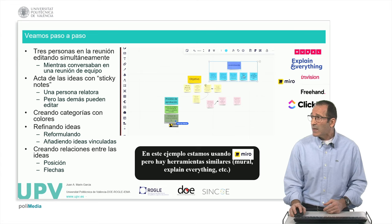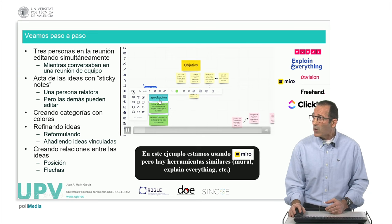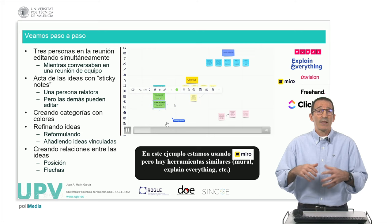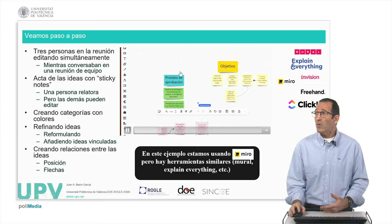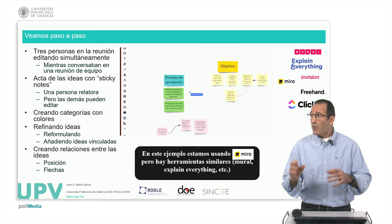You can see there are three pointers: one that's moving the most because it is the one doing the rapporteur task. Then another person was editing things at the same time. And then a third person who was pretty much just watching — or zooming in on things but not so much writing on the whiteboard.